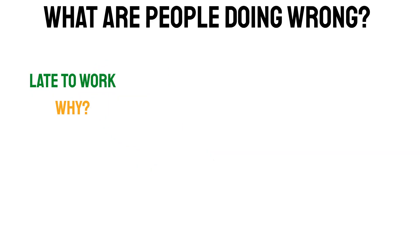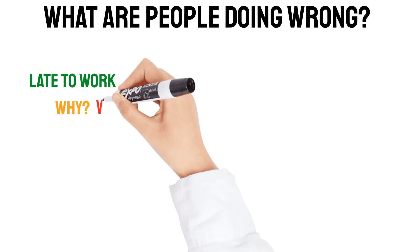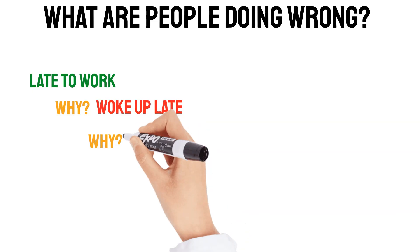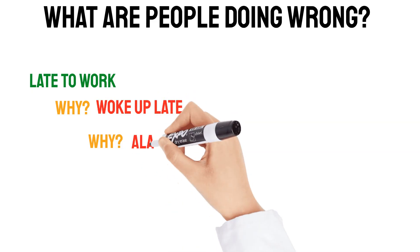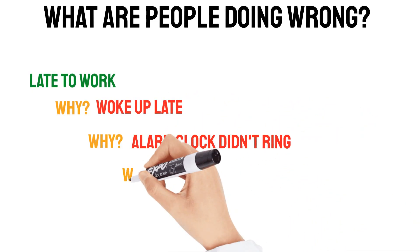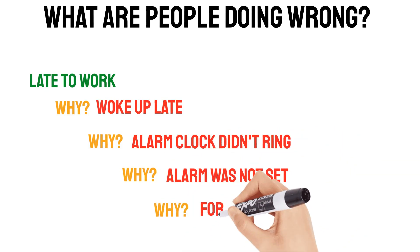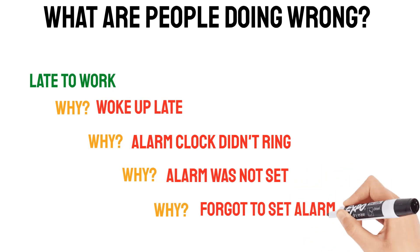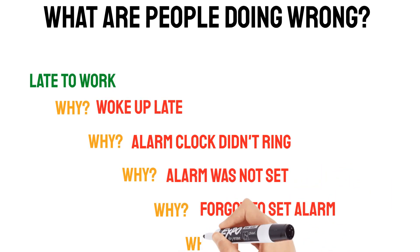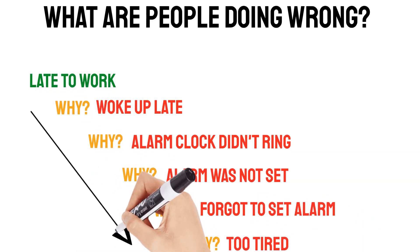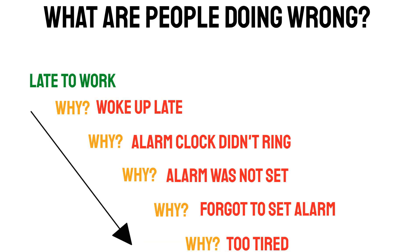Now you ask yourself: why are you late for work? One possible answer is you woke up late. Why did you wake up late? The alarm clock didn't ring. Why didn't it ring? Because the alarm was not set. Why wasn't it set? Because you forgot to set it. Why did you forget that? Maybe you were just too tired in the evening. This is how most people use the 5 whys — it's a linear process for them.